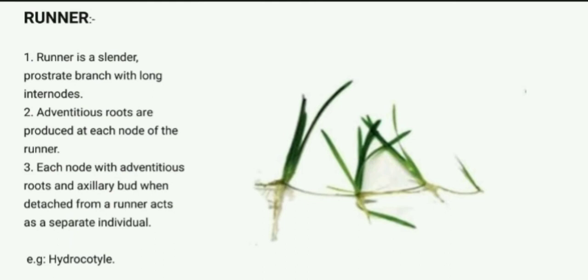Runner is a slender, thin prostrate branch with long internodes. It lies stretched on the ground. Adventitious or fibrous roots are produced at each node of the runner. Each node with adventitious roots and the axillary bud, when detached from the runner, acts as a separate individual. The example is Hydrocotyle.